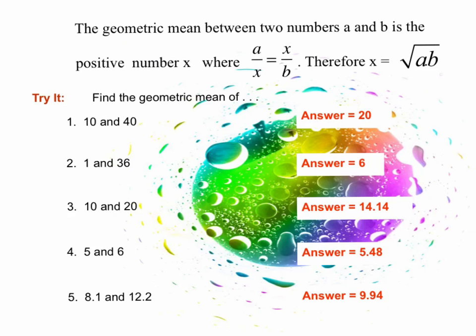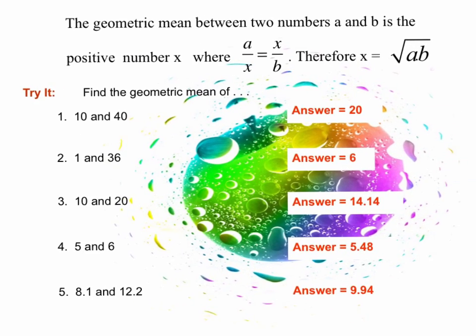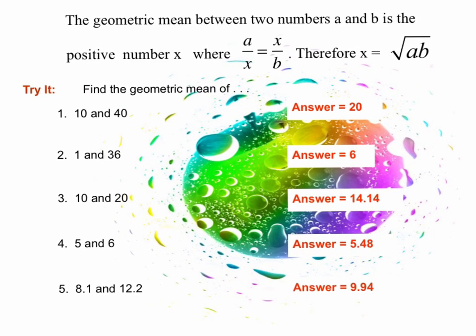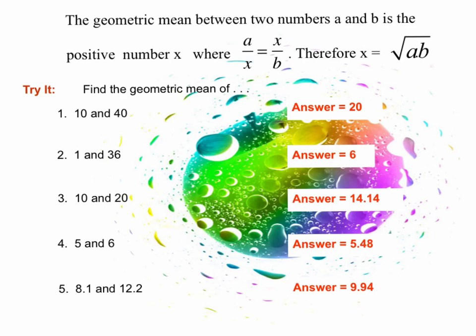I want to remind you about what the last example was from the last video. We went ahead and looked at problems 1 through 5 and had to find the geometric mean between two numbers. Geometric mean is the number in between of a geometric sequence. We discussed how to use the rule to find the geometric mean, and we're going to be applying this rule multiple times to figure out different side lengths within a right triangle.